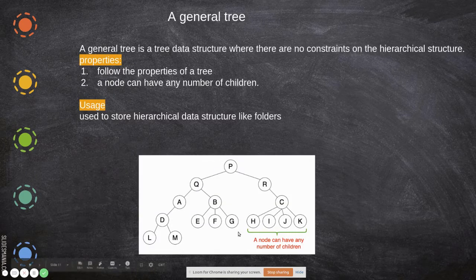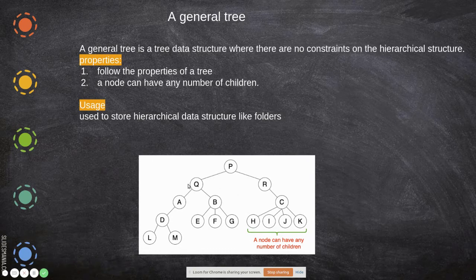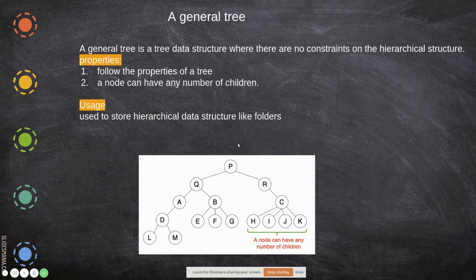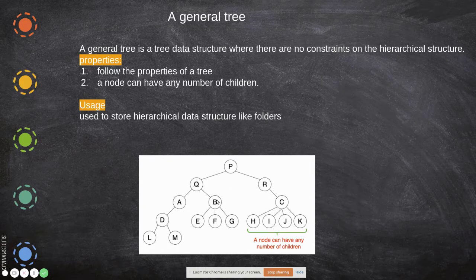In a general tree, it has any number of child nodes. It follows a root and its children — a parent can have more than two or three children. It follows the general properties of a tree, meaning it has a root, parent, and child. A node can have any number of children.